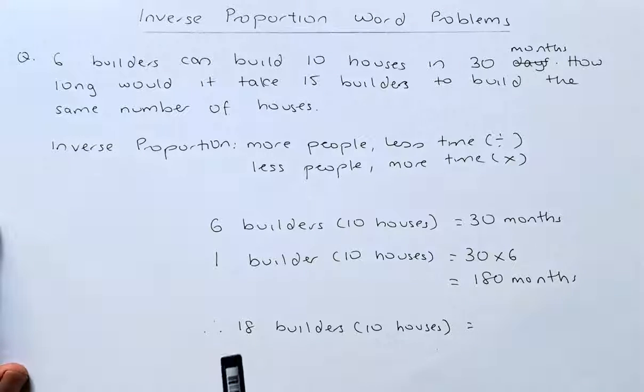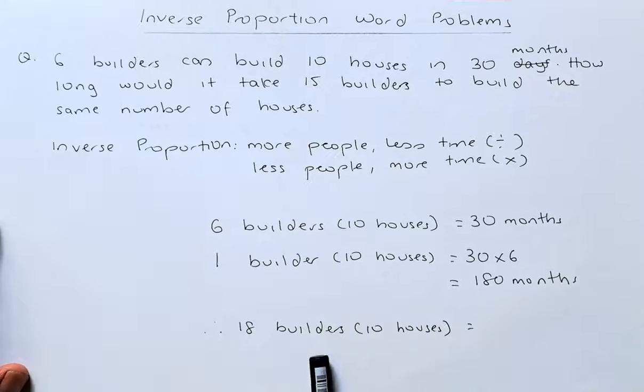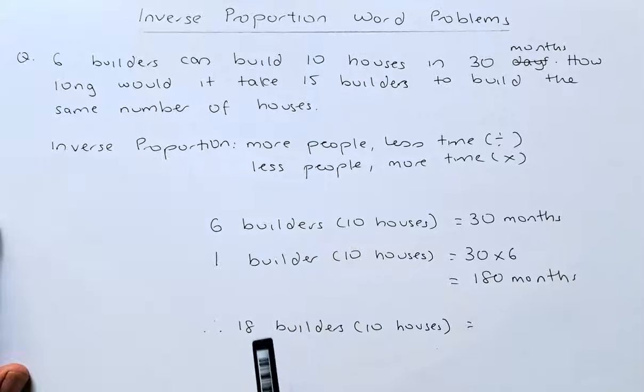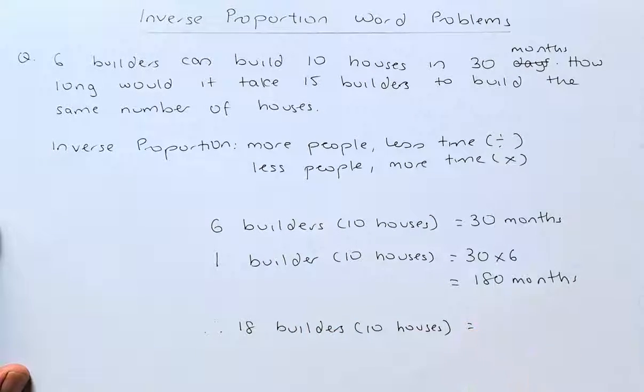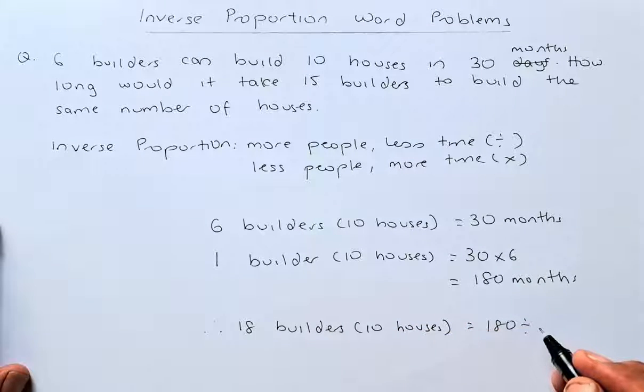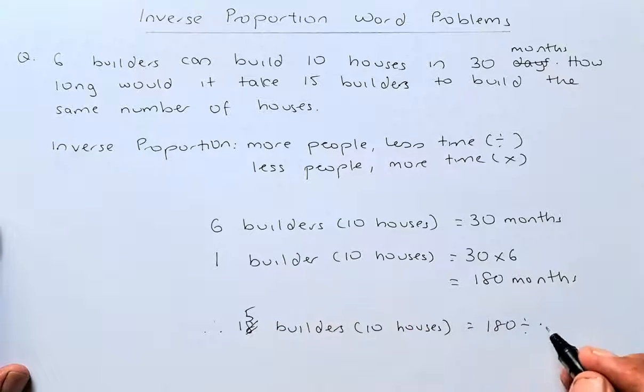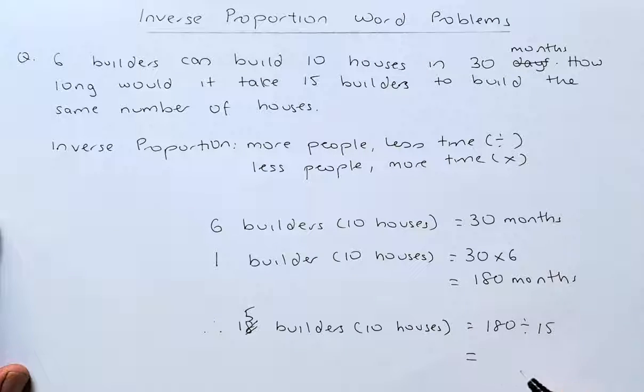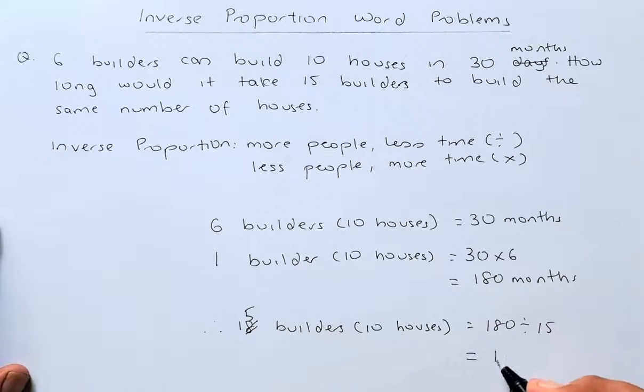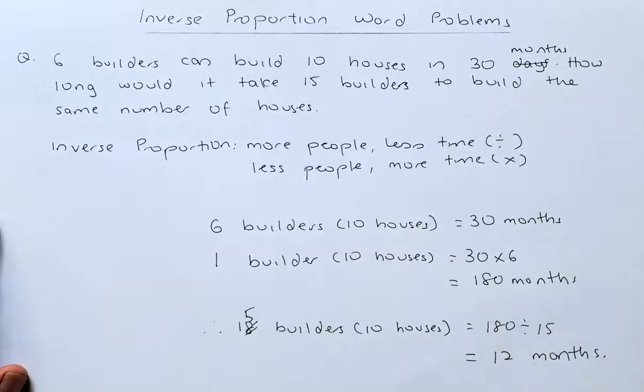Now the last step. If 1 builder can build in 180 months, so 18 builders, so from 1 to 18 is more people, so you are going to divide this time. So you are going to take 180, divide by 18. Oh sorry, it is 15 builders. Okay, it is 15. 180 divided by 15 and the answer is going to be 12 months. Got it? Great!